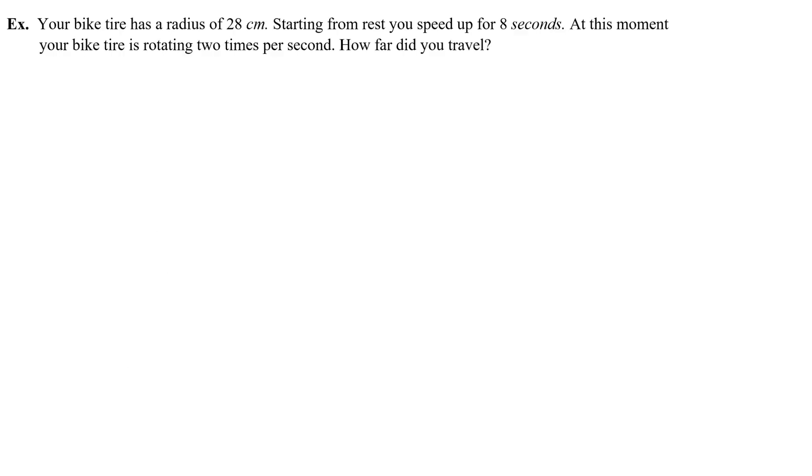Your bike tire has a radius of 28 centimeters. Starting from rest, you speed up for eight seconds. At this moment, your bike tire is rotating two times per second. How far did you travel?